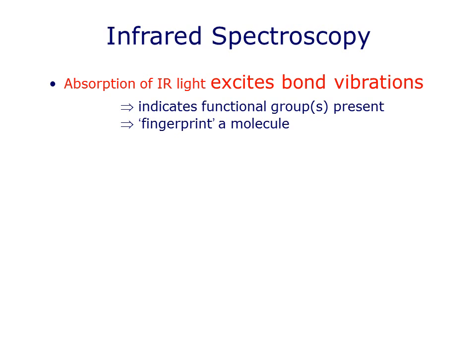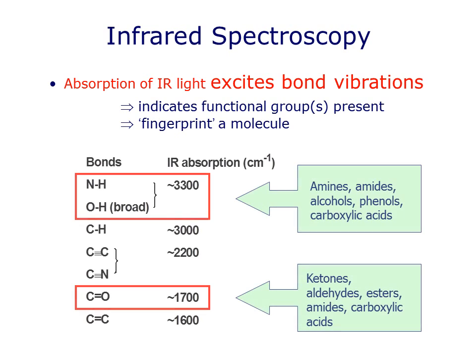Infrared spectra can hold a lot of subtle detail, but for now we're going to use IR to recognize just the presence of several key functional groups, which give characteristic absorptions in the IR spectrum. Watch out in particular for strong, broad signals above 3,000 wave numbers — these indicate that OH or NH bonds are present, as in alcohols, carboxylic acids, amines, for example. Look also for strong, sharp peaks between 1650 and 1800 wave numbers. A signal here tells you that your molecule contains a carbonyl group, C double bond O, as in aldehydes, ketones, esters, and so forth.